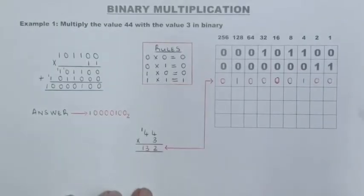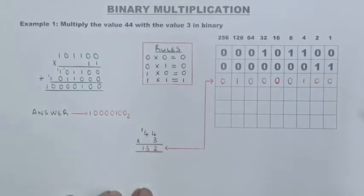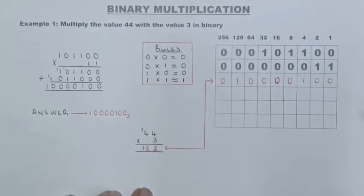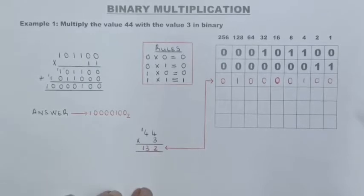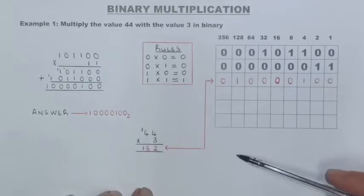Hi guys, in this video we will be explaining how to multiply two decimal values by converting to binary first and then multiply. We will also show you how to use the binary code system to see what the values of the binary number are before you do the calculation. Stay tuned for three examples. Let's have a look at the first one.